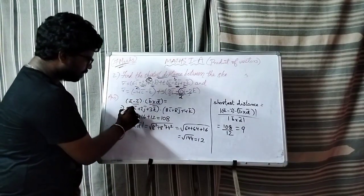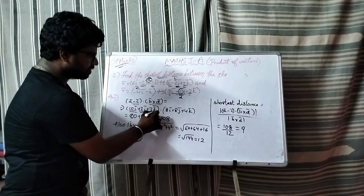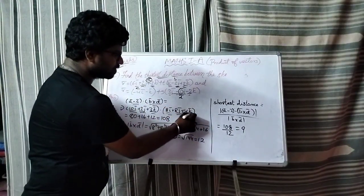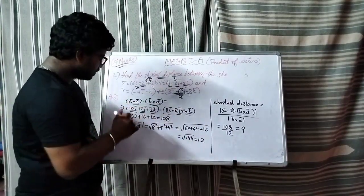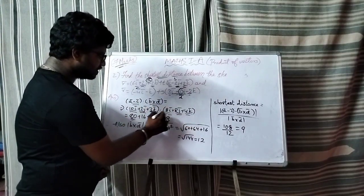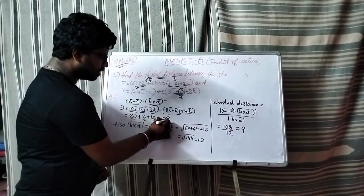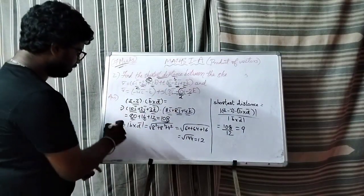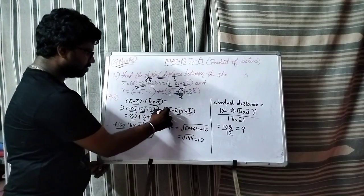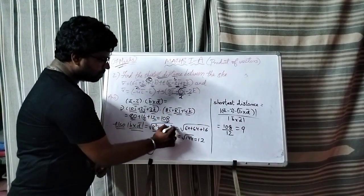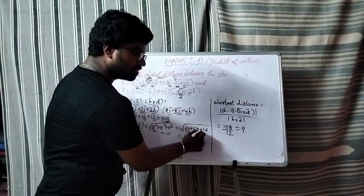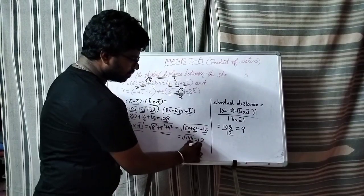Now dot product: a minus c is 10i plus 2j plus 3k, and b cross d is 8i plus 8j plus 4k. So 10 into 8 is 80, 2 times 8 is 16, 3 times 4 is 12, total is 108. The modulus of b cross d is root of 8 squared plus 8 squared plus 4 squared, which is root of 144, which is 12.